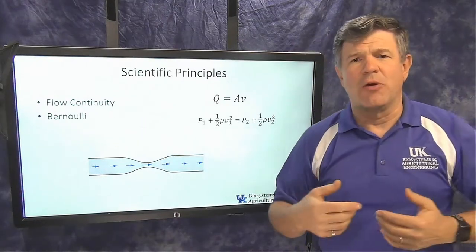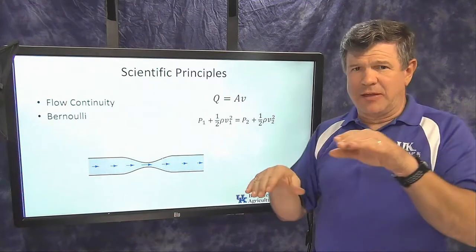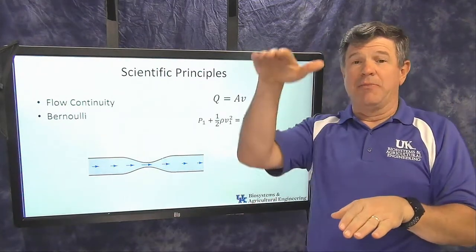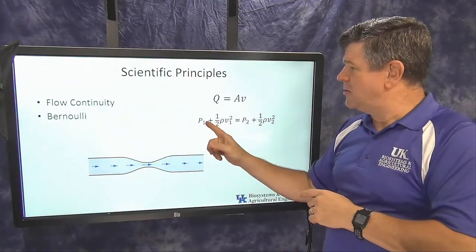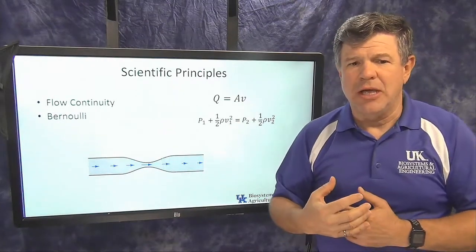Now Bernoulli, he studied flow rates a lot. If the area goes up, the velocity goes down. If the area goes down, I get a small pipe, the velocity has to go up. And he said, there's also a relationship between that velocity and the pressure in that pipe.